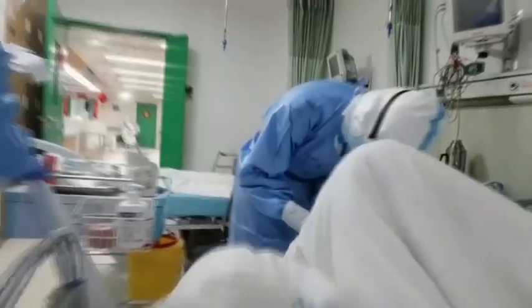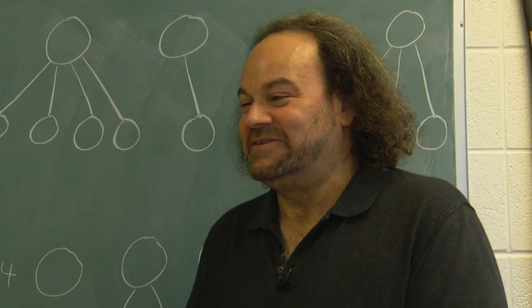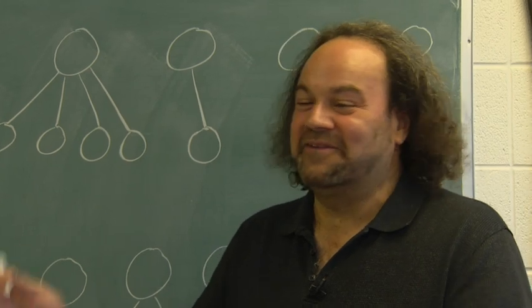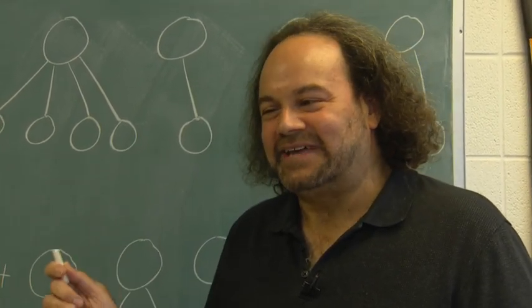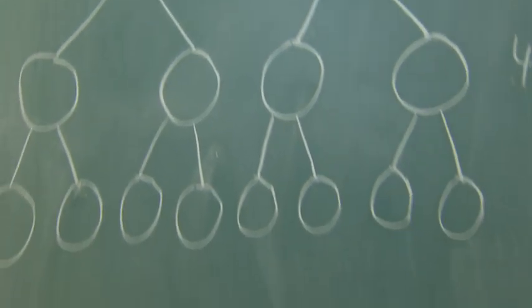The whole story is this reproduction number — on average how many people does each new case infect. If it's less than one, no problem, it'll die out quickly and won't be too bad. But it seems like it's a fair bit more than one, probably over two, and that's enough to get this quick spreading. We can try to wash our hands, not touch our face, avoid close interactions, but it's a tricky situation. Right now it does seem like it's spreading faster than we can control.